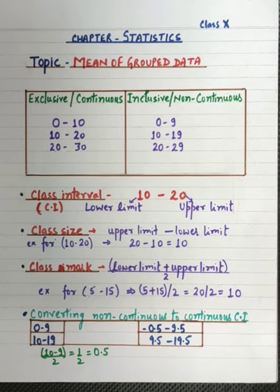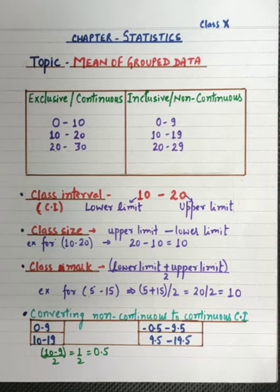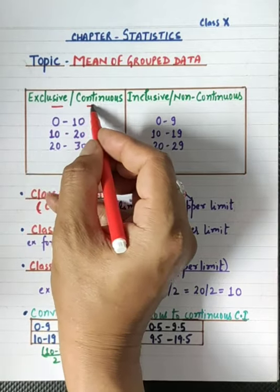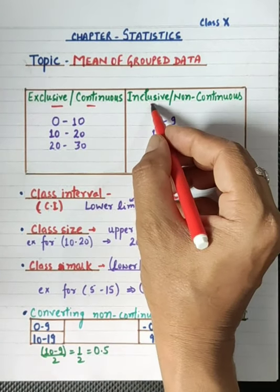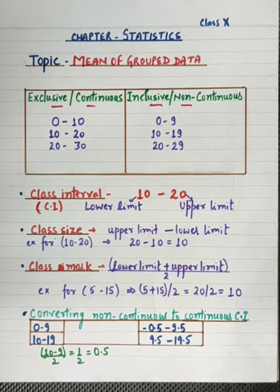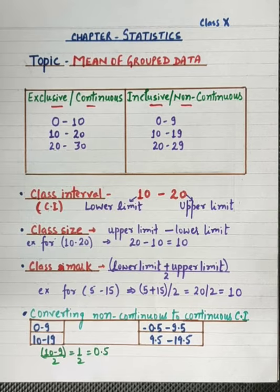This formation is called group formation. There are two types of groups: the first is exclusive and continuous, and the second is inclusive and non-continuous. We have two examples to understand. First, let us focus on the exclusive and continuous type, which is called a continuous class interval.